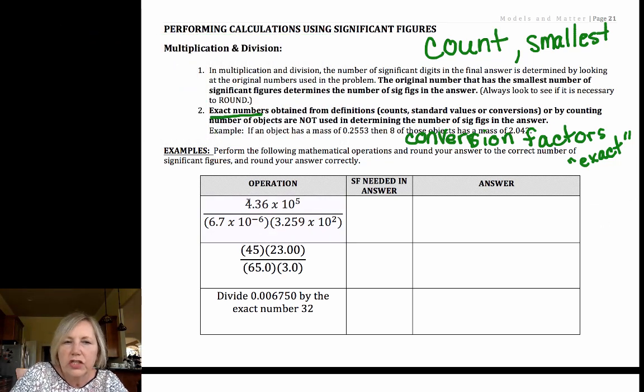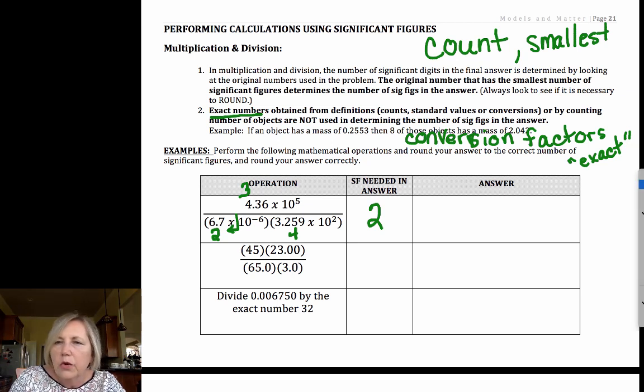All right, so let's take a look at what we have. I like to start out. If I look at this first number, I have three sig figs in the top. There's two. Remember, when it's scientific notation, we only count what's in front of that times sign - we only count the coefficient. And this one has four. What that means is that our final answer must be rounded to two significant figures.